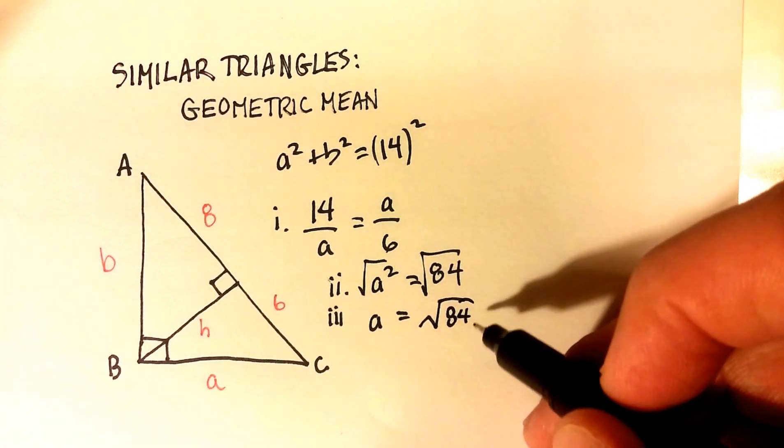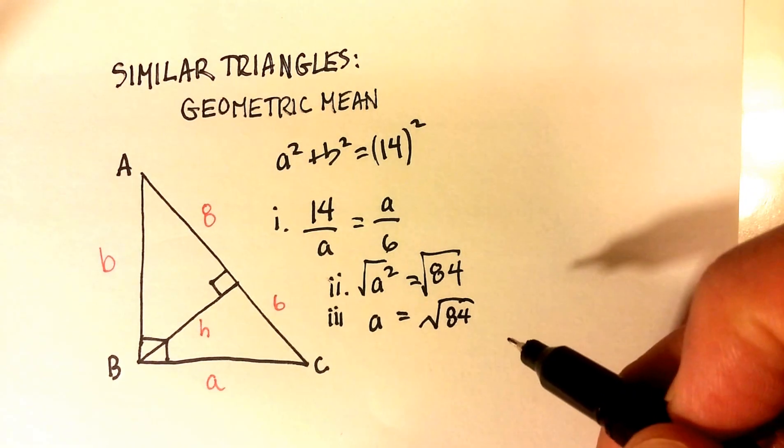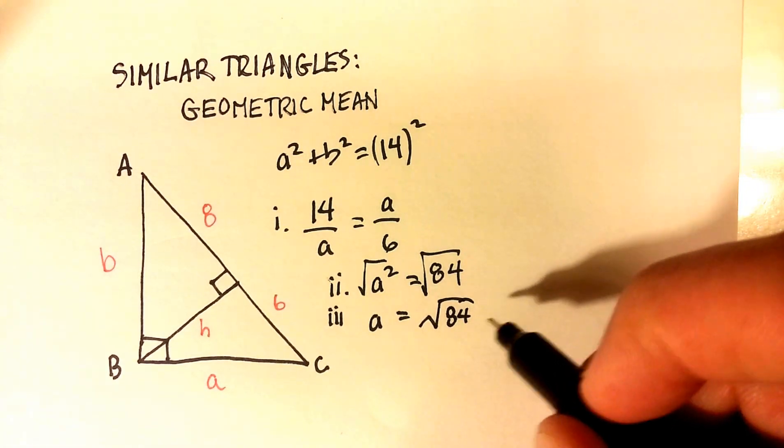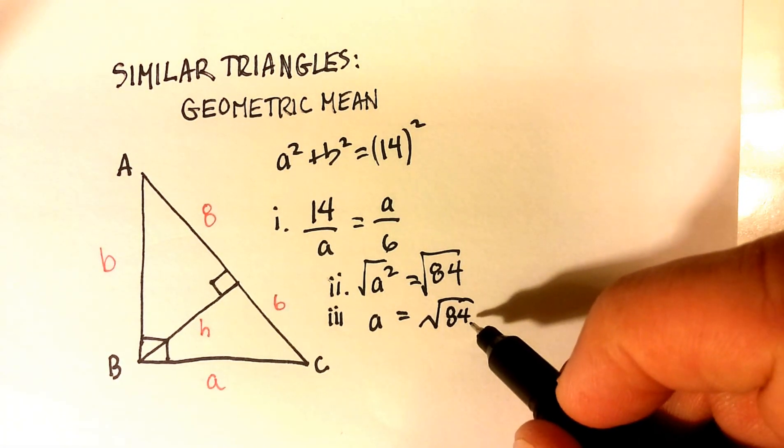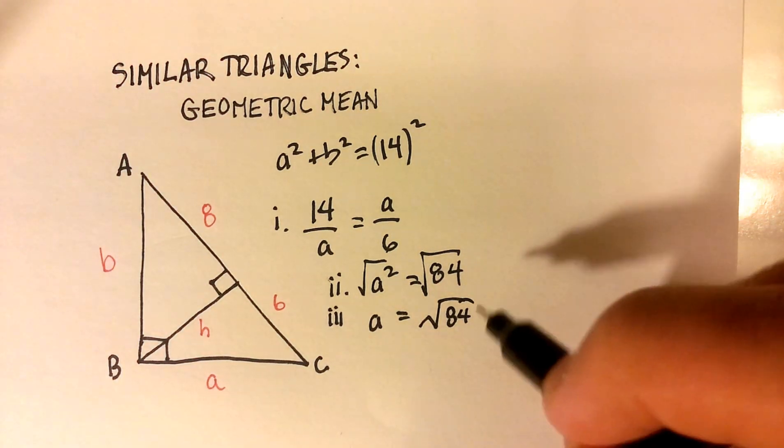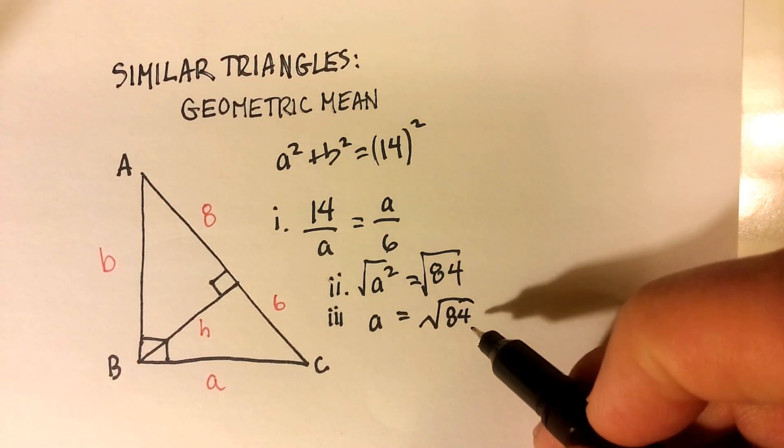Then you take the square root of both sides, and you'll get A is equal to radical 84. Now, if you can reduce this, you should. And how do we reduce that? We have to try to find the perfect squares in here.